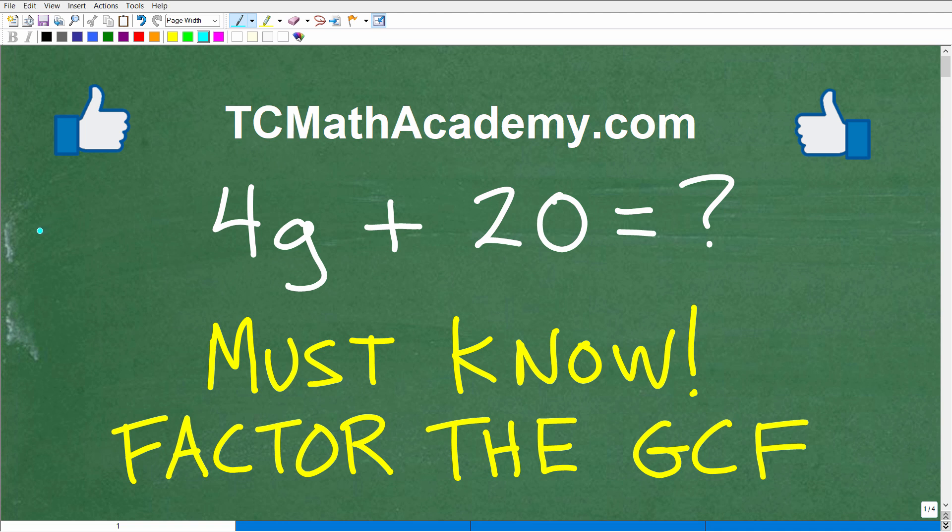One of the most important math skills you need to have is that of factoring. When you learn how to factor, you first learn how to factor out something called the GCF, which stands for the Greatest Common Factor. Here is the question that we have: 4g plus 20. I'd like you to factor out the Greatest Common Factor. If you know how to do this, go ahead and put your answer into the comment section. I'll show you the correct answer here in just one second.